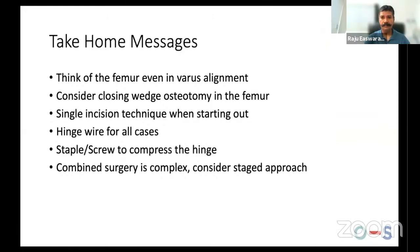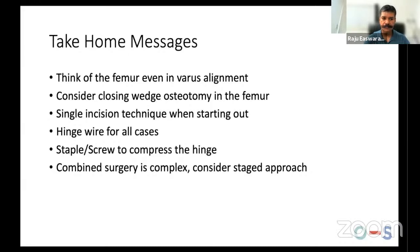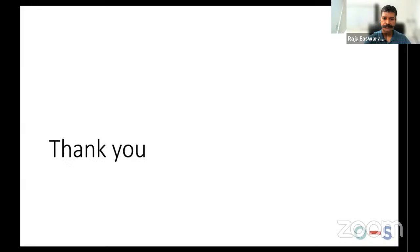The take-home messages: think of the femur even in varus malalignment. Consider closing wedge osteotomy in the femur whether doing a valgus or varus correction. Use a single incision when starting out rather than two-incision technique. Use a hinge wire for all cases — it's simple and pays massive dividends for hinge protection. Consider a staple or screw to compress across the hinge. Combined surgery is complex — consider a staged approach. These procedures are not for the faint-hearted.